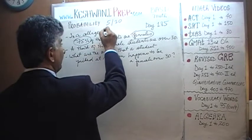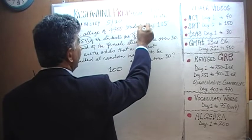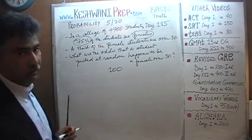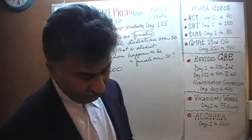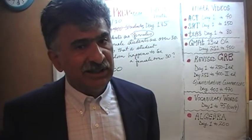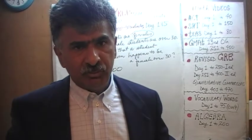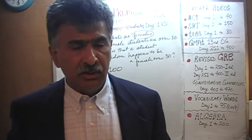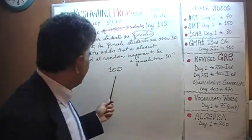If they give you a figure — say, a college of 4,700 students — your job is to simply ignore it. It plays no role. The problem is not asking us how many females in the college are over the age of 30. They are asking us for the odds. The odds of picking a female or male over or under 30 has absolutely nothing to do with how many students are in the school.